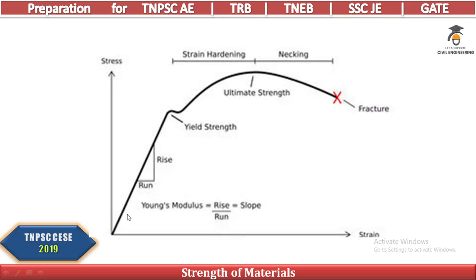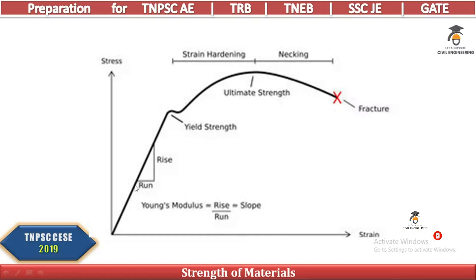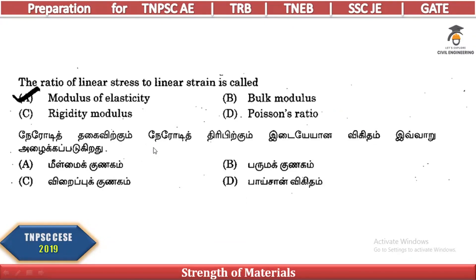On the stress-strain graph up to the elastic limit, Young's modulus is the slope — rise divided by run, vertical by horizontal. So this is the stress-strain relationship, and the answer is modulus of elasticity.